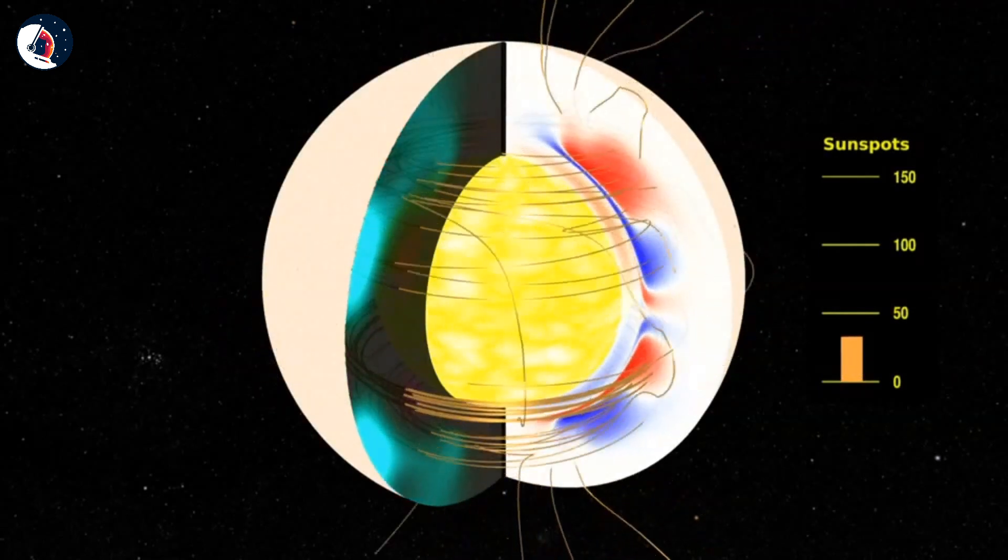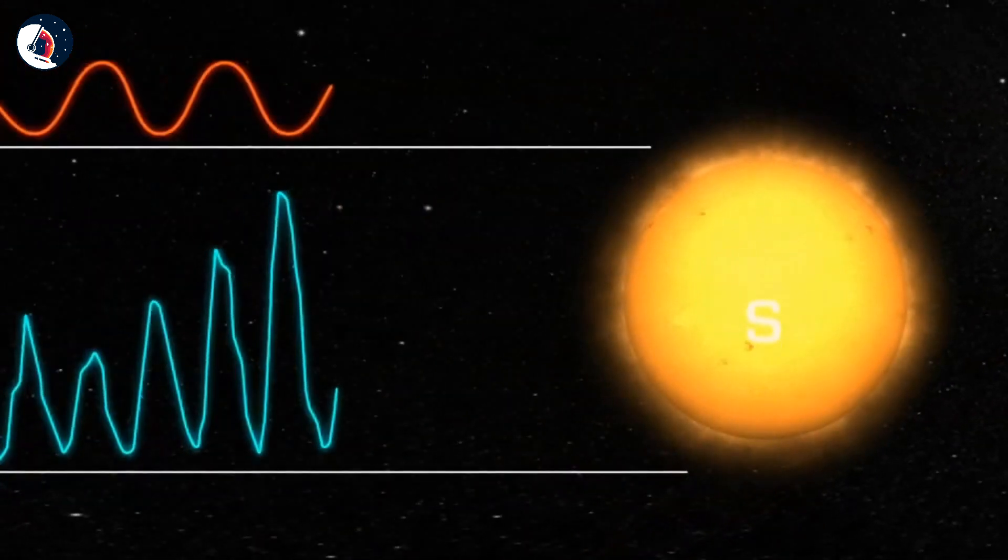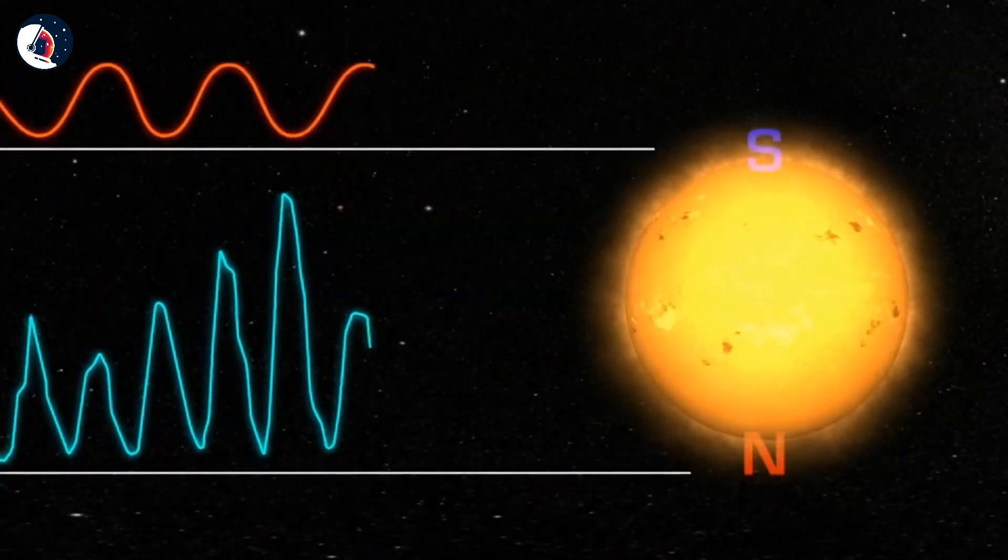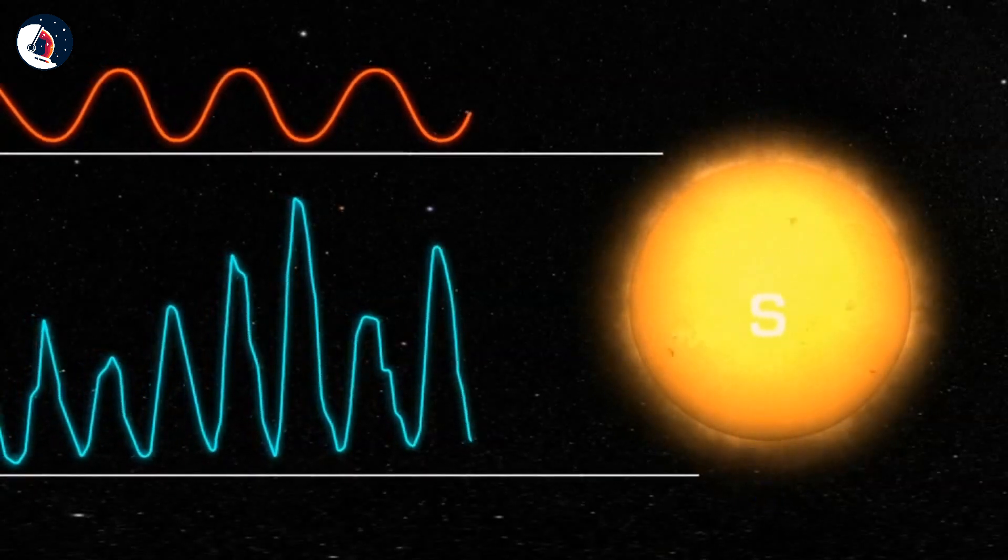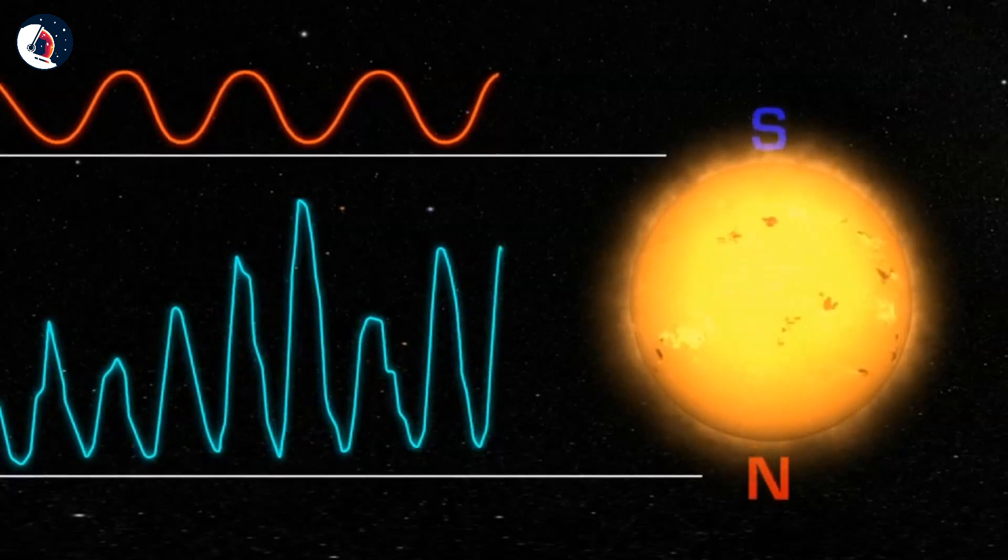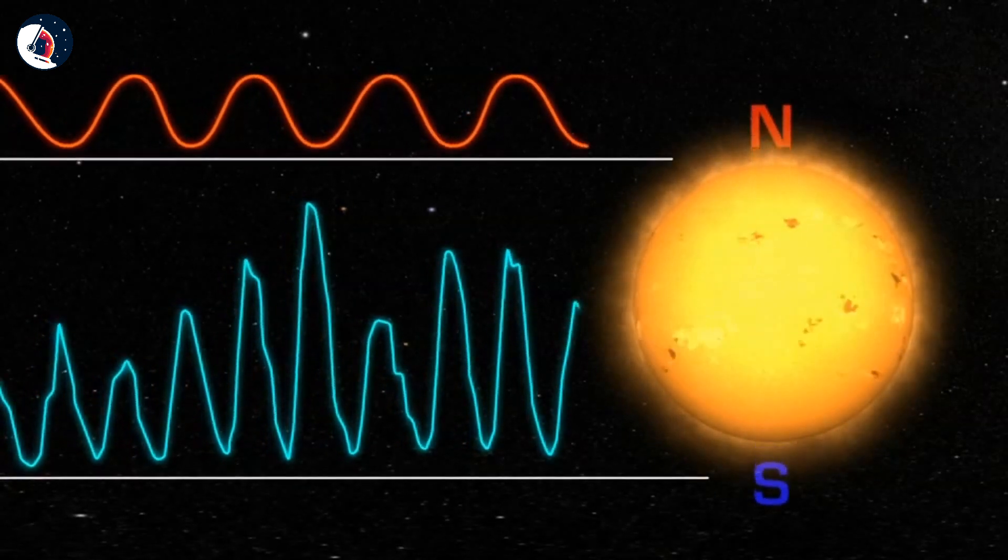Because the sunspot cycle follows a similar pattern regardless of the orientation of the poles, it only takes half as long as the solar cycle. The two cycles are different, but the 11-year sunspot cycle is often referred to as the solar cycle, which can be a little confusing.